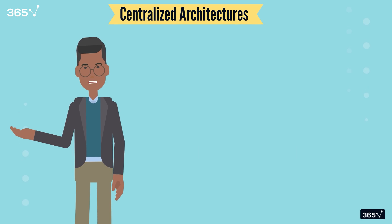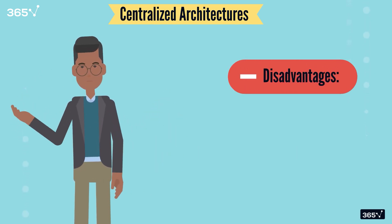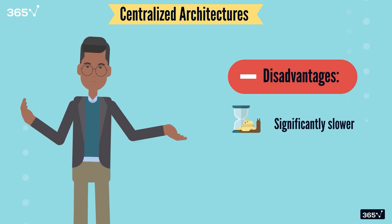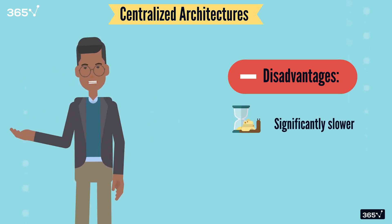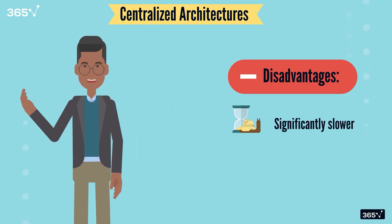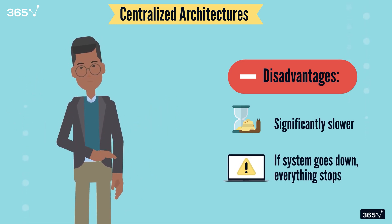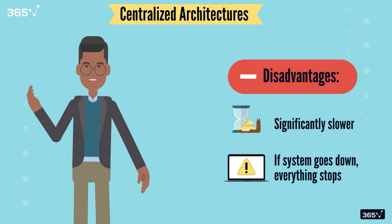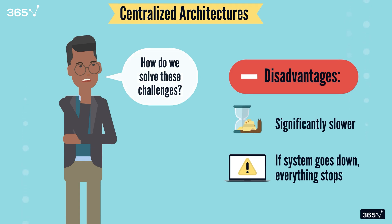While centralized architectures have their advantages, they also come with some limitations. Central data systems can get significantly slow if too many people are accessing it at once — imagine thousands of readers issuing, reading, and returning books at the same time — causing bottlenecks. And since there is one central system, if it goes down, everything comes to a standstill. To solve these limitations, we would need an architecture that can withstand failures, so is fault-tolerant and allows for parallel access of data.